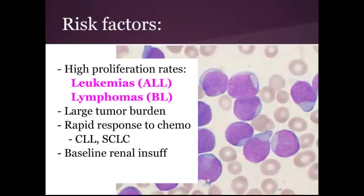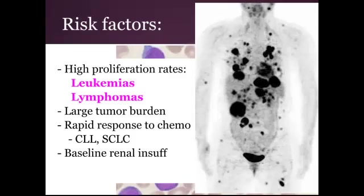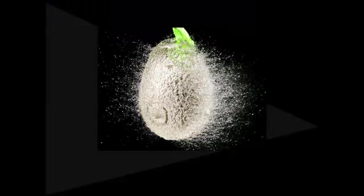Risk factors for tumor lysis syndrome include cancers that have a high proliferation rate — for example, leukemia, ALL, and lymphoma. Any patients that just have a large tumor burden to begin with. Some cancers that have a really rapid response to chemo treatments, for example CLL and small cell lung cancer. And also patients that just have a baseline renal insufficiency.